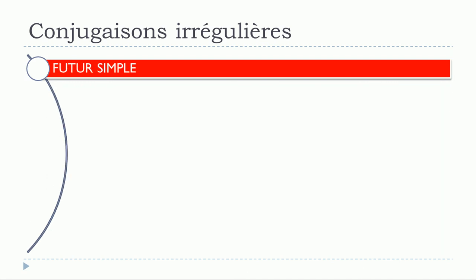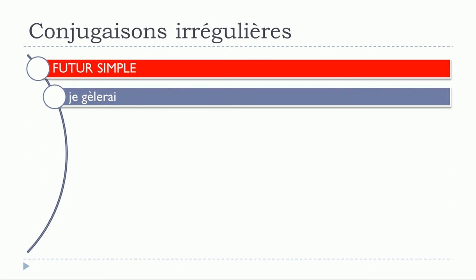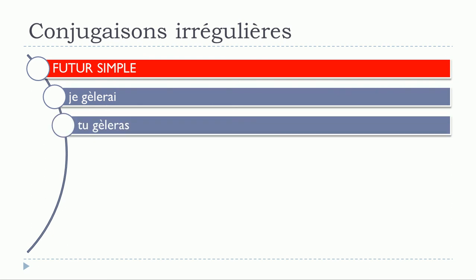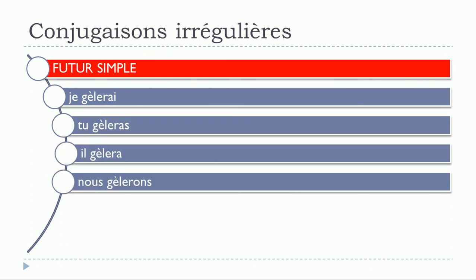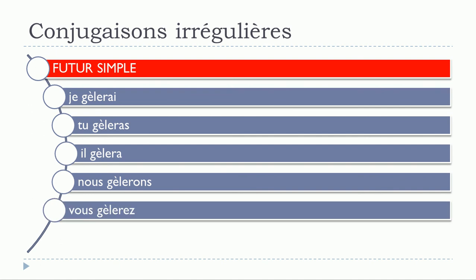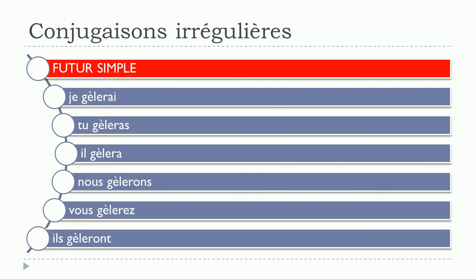So let's see now for the futur simple: je gèlerai, tu gèleras, il gèlera, nous gèlerons, vous gèlerez, ils gèleront. In that case you can see that all the forms are concerned and it's exactly the same modification — you need to put this accent grave on top of the first e.